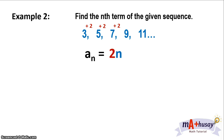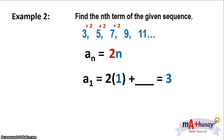Now, if n is 1, we want to get a sub 1, which we know is 3. When n is 1, 2 times 1 is 2. What number do we add to 2 to get 3? We have to add 1. So we check whether the nth term, a sub n equals 2n plus 1, holds true for all terms.